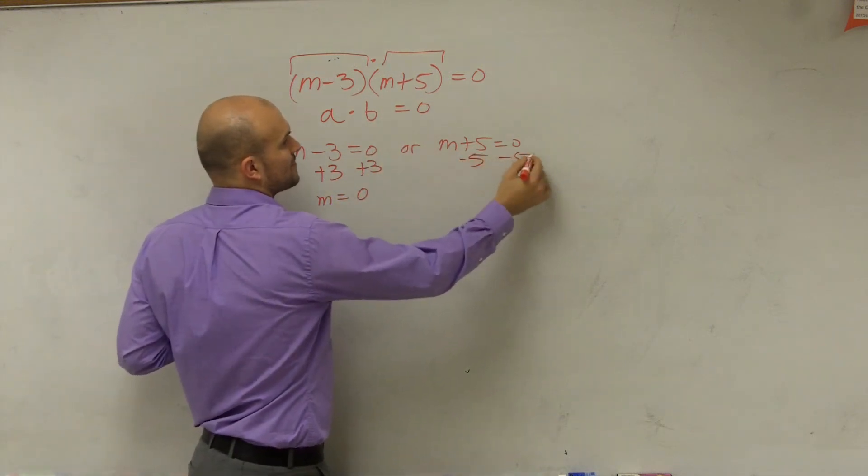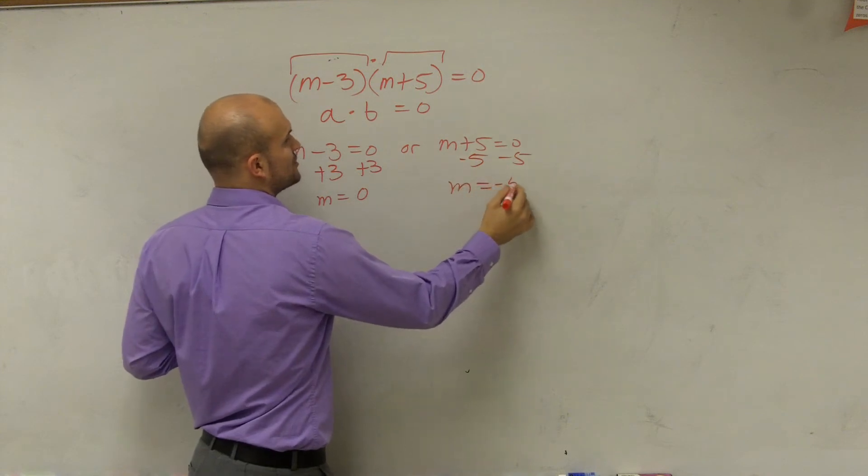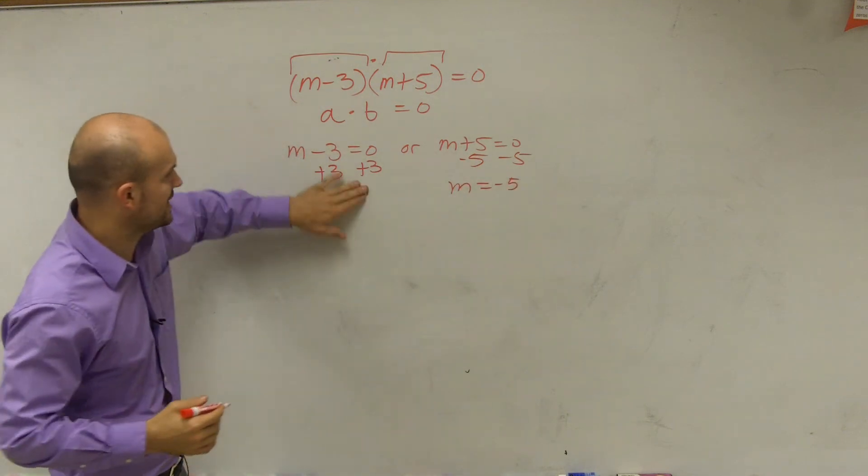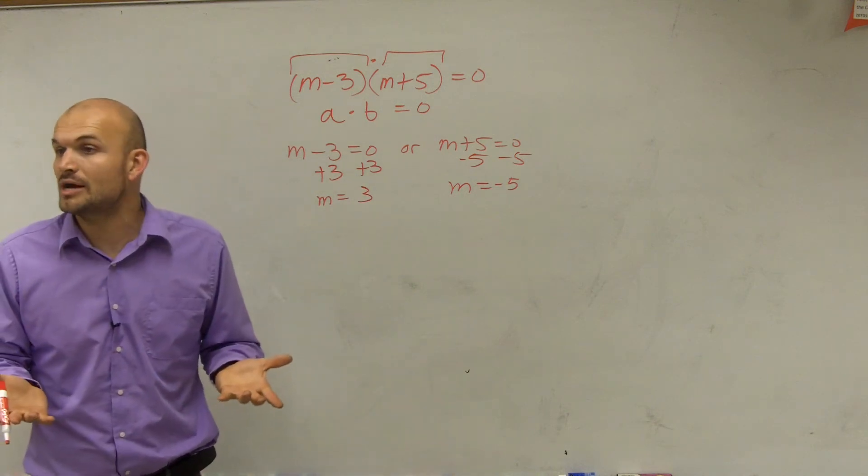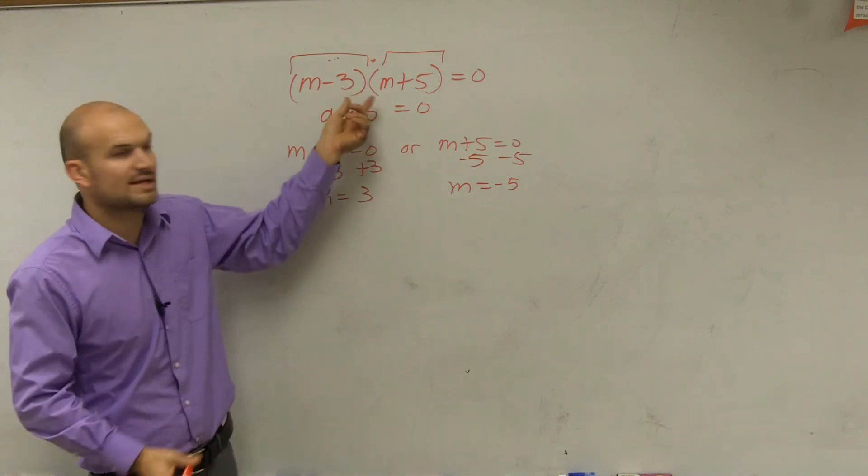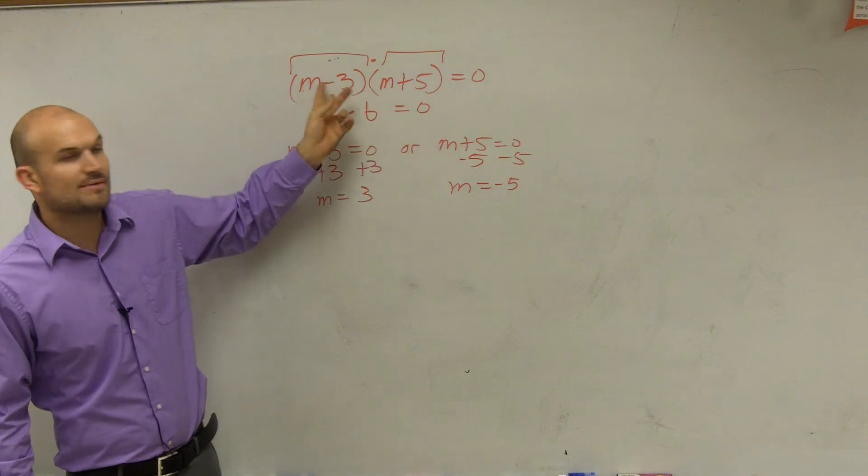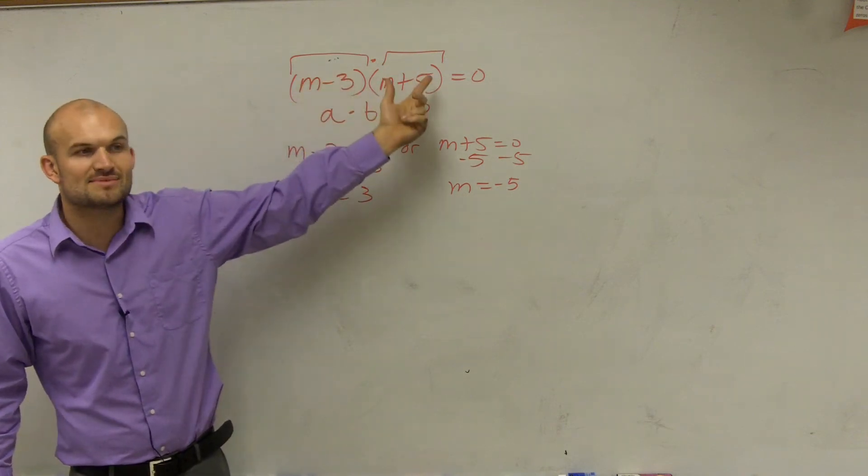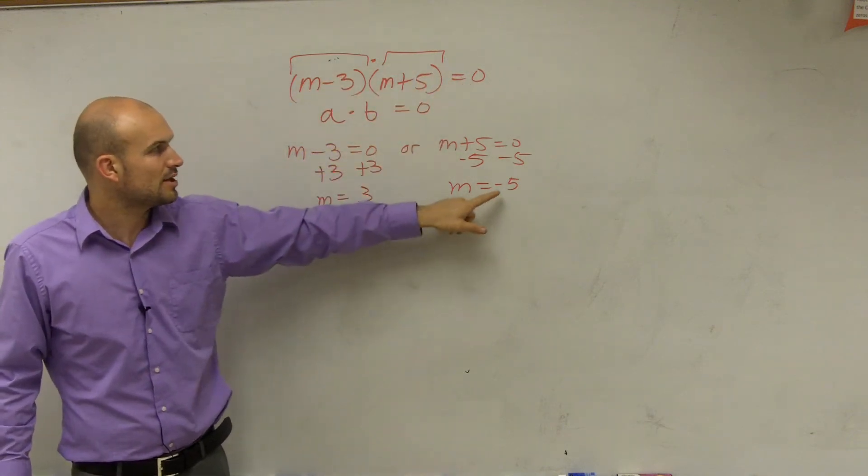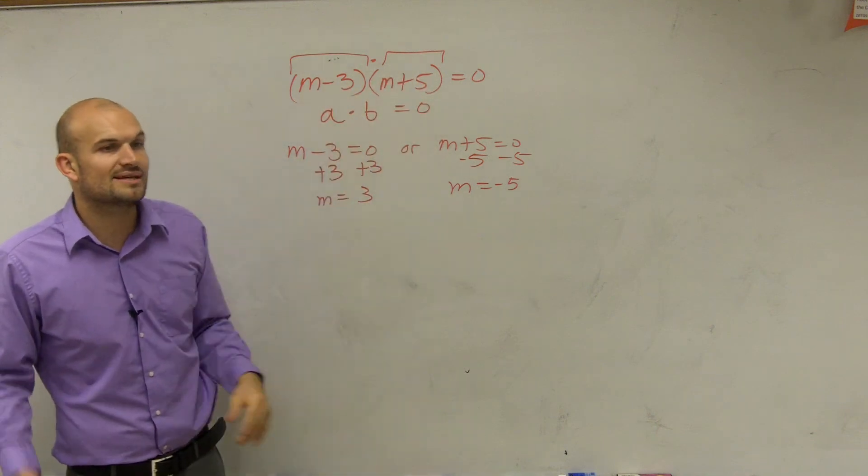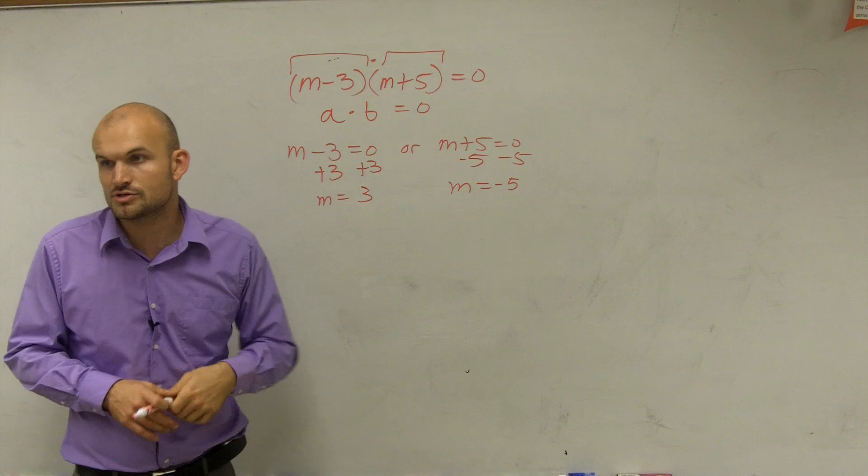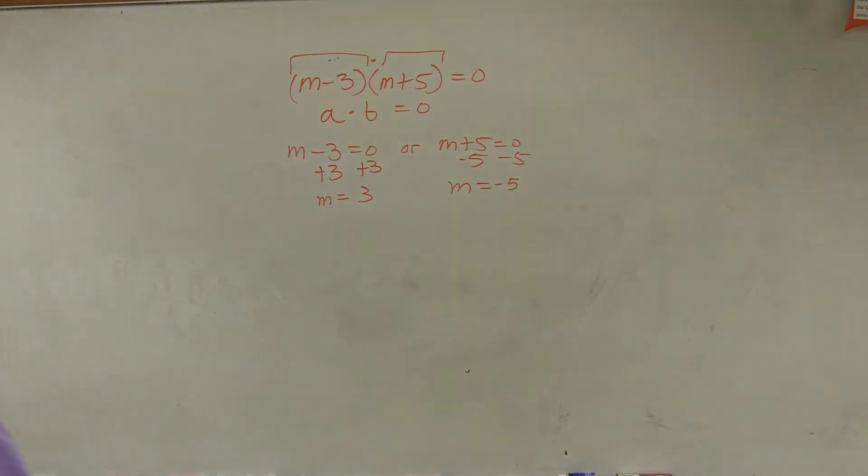Then I can subtract 5. Therefore I have my two solutions are m equals 3 and m equals negative 5. And what happens, ladies and gentlemen, if you look at this, if I plug in 3 into this equation for m, 3 minus 3 is 0. 0 times anything is 0. You plug in a negative 5. Negative 5 plus 5 is 0. 0 times anything is 0. So therefore those are your two equations, or your solutions.